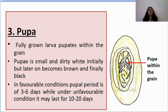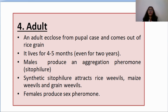Adult: an adult ecloses from the pupal case and comes out of the rice grain. Eclose means the process of emerging from the pupal case — it is called eclosion. The adult lives for 4 to 5 months, even up to 2 years. Males produce an aggregation pheromone called cytophilure. Synthetic cytophilure attracts rice weevils, maize weevils, and grain weevils. Females also produce a sex pheromone.